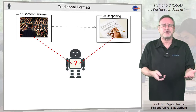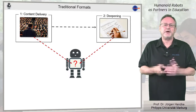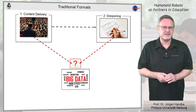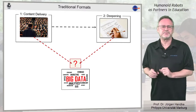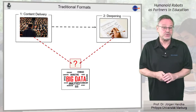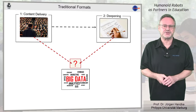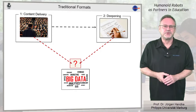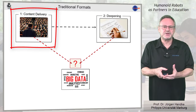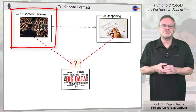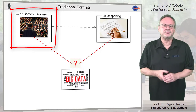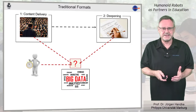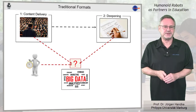The reasons are obvious. On the one hand, in classical formats there is no digital data that robots could exploit for further discussion. On the other hand, during the in-class phase, which is almost exclusively required for the delivery of content, there is hardly any time for additional actions.